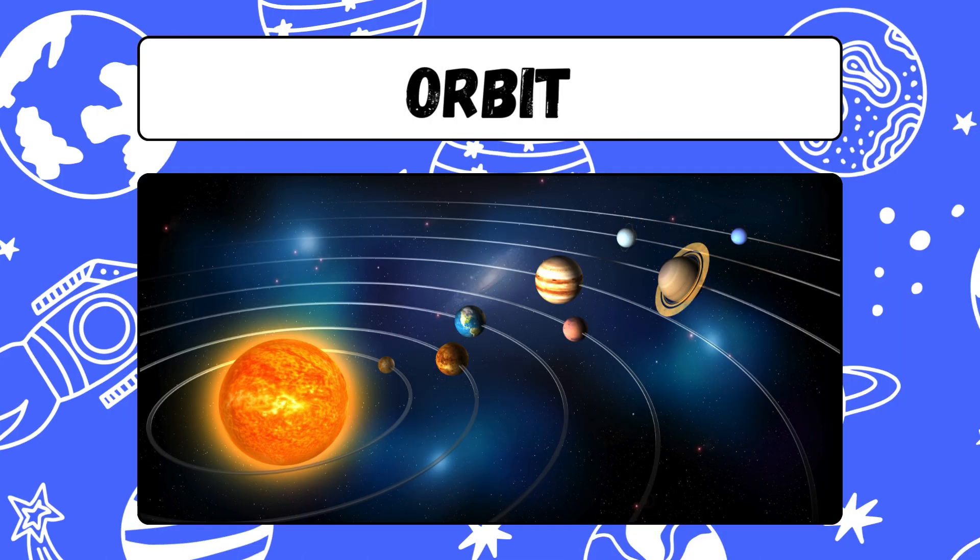Orbit. An orbit is the curved path a celestial object takes around a planet, star, or moon. Orbit.